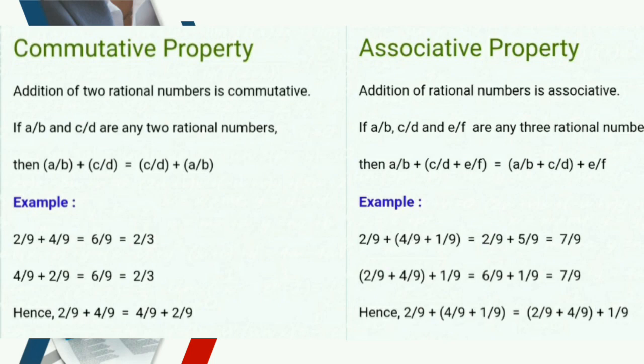If you add 2 upon 9 and 4 upon 9, you get 6 upon 9, which equals 2 upon 3. This is equal to 4 upon 9 plus 2 upon 9. This is the commutative property of rational numbers: a upon b plus c upon d equals c upon d plus a upon b.